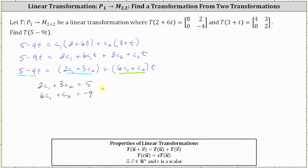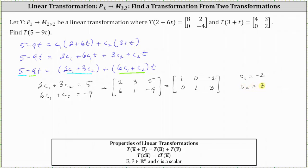Let's solve the system using an augmented matrix where the first row is [2, 3, 5] and the second row is [6, 1, -9]. Writing this in reduced row echelon form, the first row becomes [1, 0, -2] and the second row is [0, 1, 3]. So C1 equals negative 2 and C2 equals positive 3.